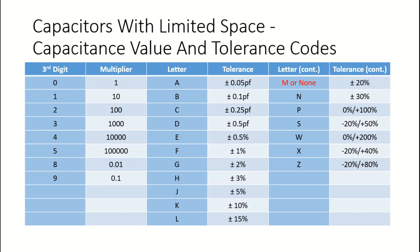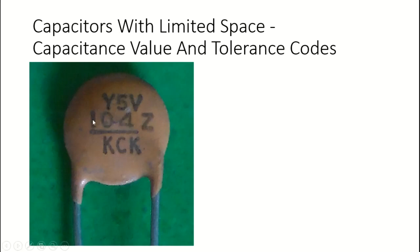The first two numbers indicate the first two digits - the leftmost digits - of the capacitor value, and then the third digit tells us what the multiplier is. The last letter on the right side tells us the tolerance for that capacitor. We'll use the table here, which gives both the multiplier and tolerance information, to decode the capacitor value of the one we looked at previously: 1-1-0-4-Z.